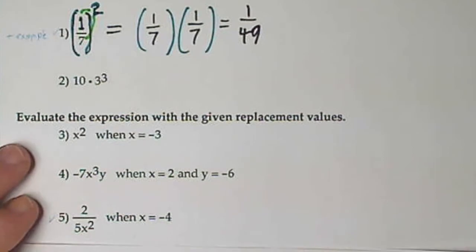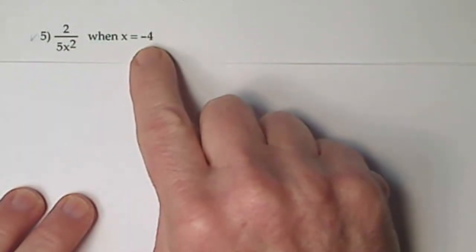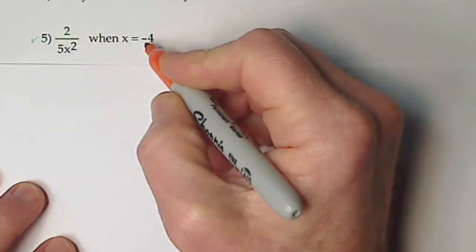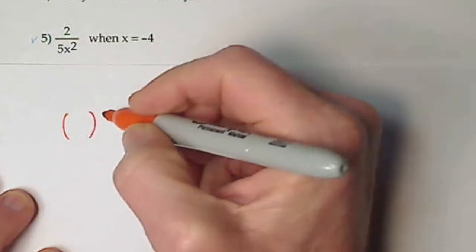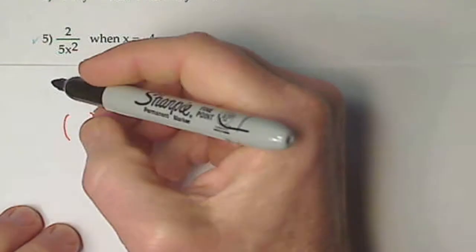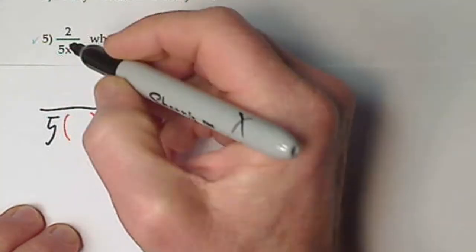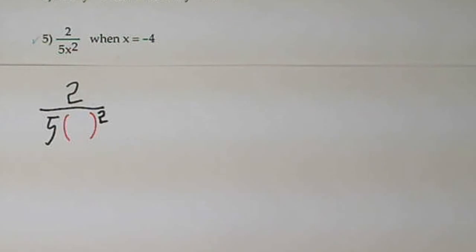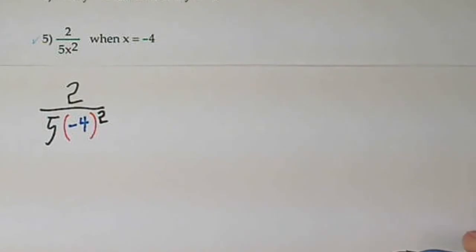Number 5 — here they want us to plug in x equals negative 4. I suggest, especially when you're plugging in a negative value for the variable, it's a good idea to put parentheses right where the variable is and then bring everything else down. So we've got our 5 sitting here, and whatever is inside those parentheses is squared, with this 2 sitting on top. I've rewritten the expression with parentheses where the variable x was, and I put a negative 4 inside.